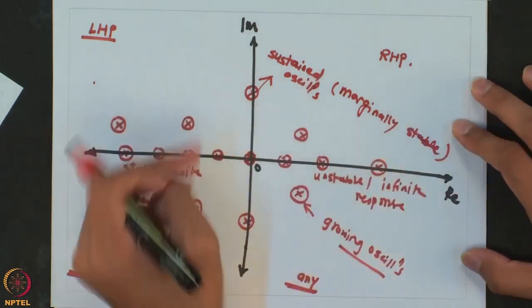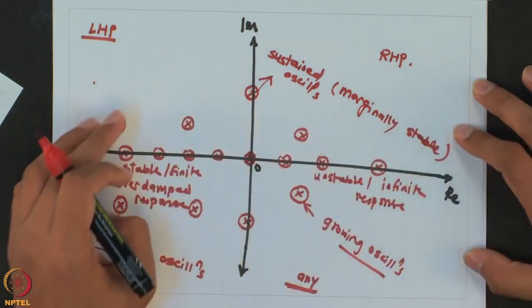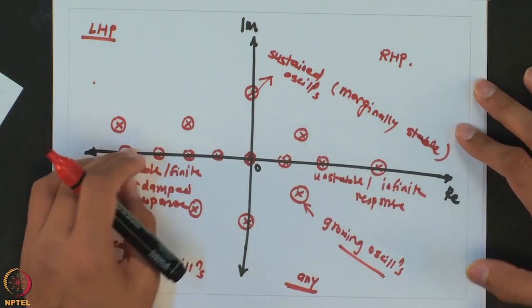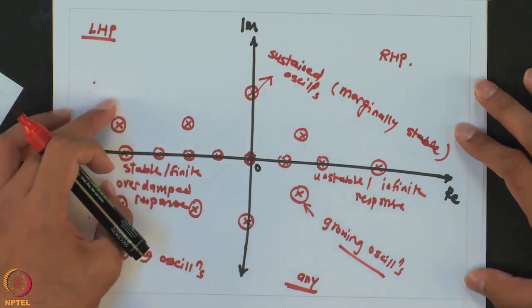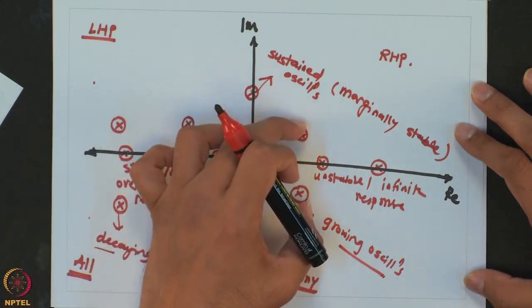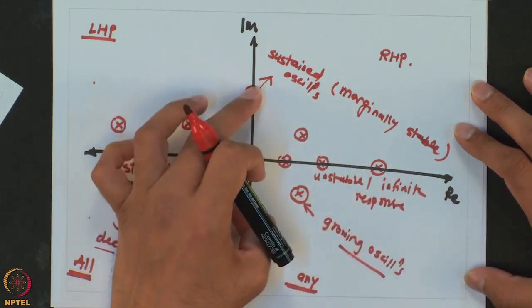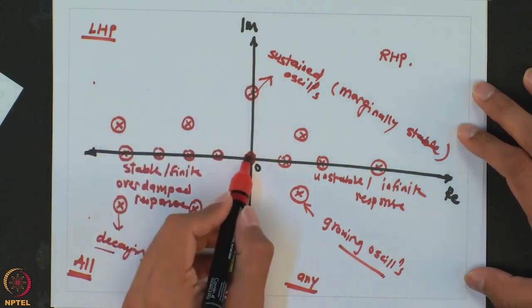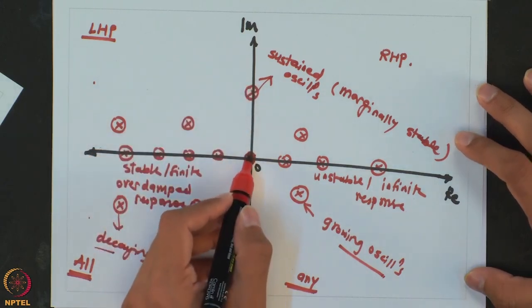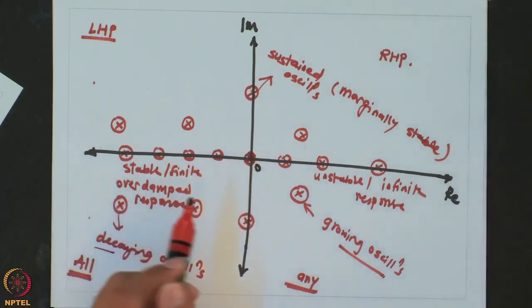So depending on where the poles of the process lie, you may have an overdamped stable and finite response, decaying oscillations, growing oscillations, an unstable or infinite response, sustained oscillations, or an integrator which increases linearly as a function of time. The overall dynamic modes of the process can be determined simply by looking at the poles. Next come the zeros.